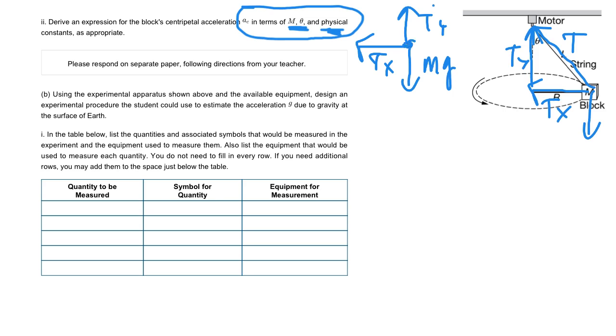Hopefully you notice this is in balance - TY and MG - so we could write TY equals MG. And then TX, this is the piece that's providing the centripetal force keeping us in the circle, so we could write this as MA or MAC. Now we have our two equations. Basically we just want to combine these two together.